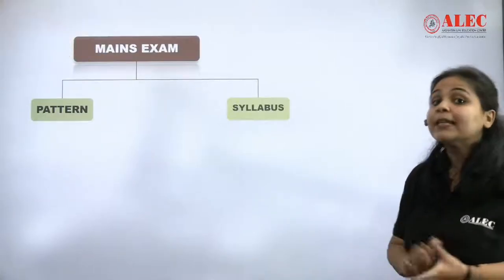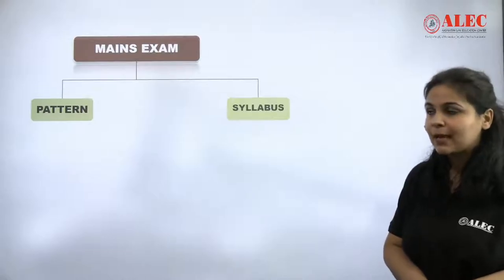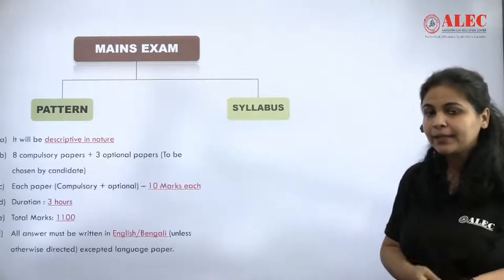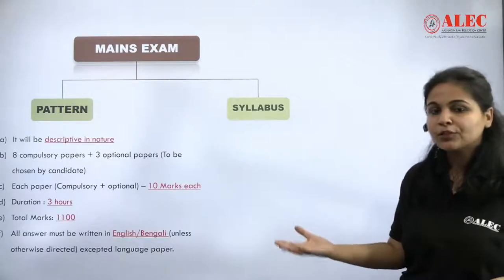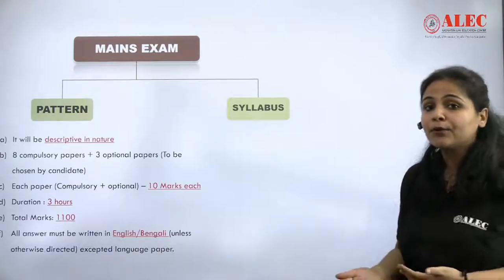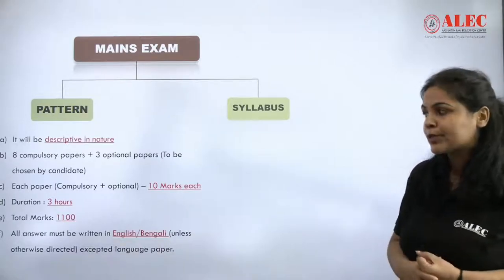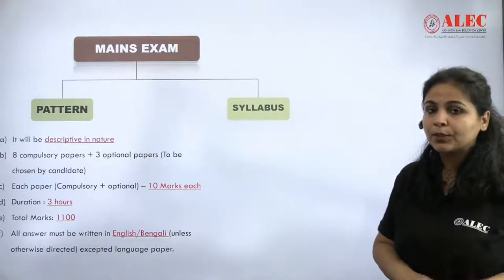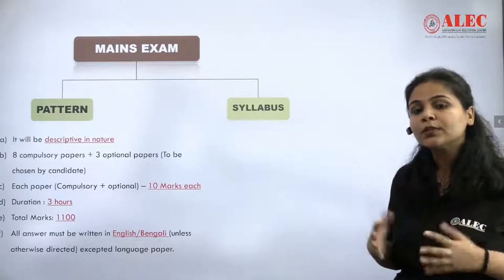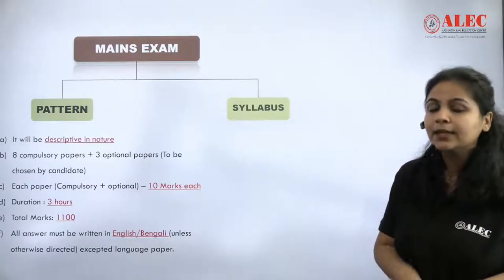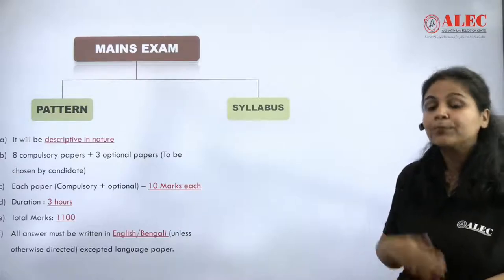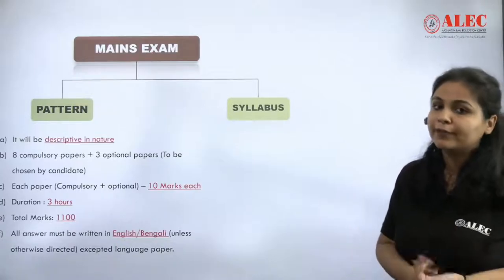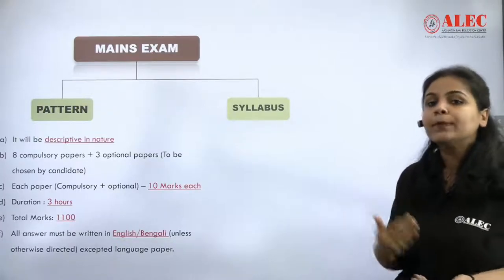Now let's go to the next round, which is the main examination. Again, I have divided it into pattern and syllabus. The pattern is descriptive in nature. In total, you will have 8 compulsory papers and 3 optional papers, giving 11 papers total. Each paper is 100 marks, so the total marks will be 1100. For every paper, you will get 3 hours.